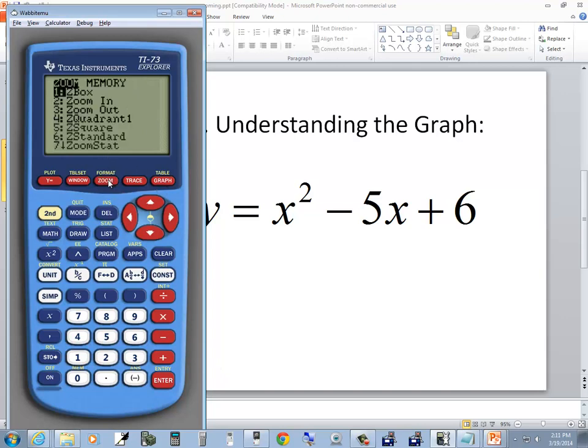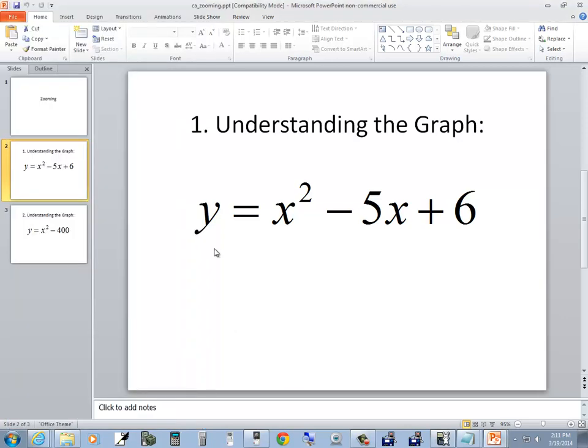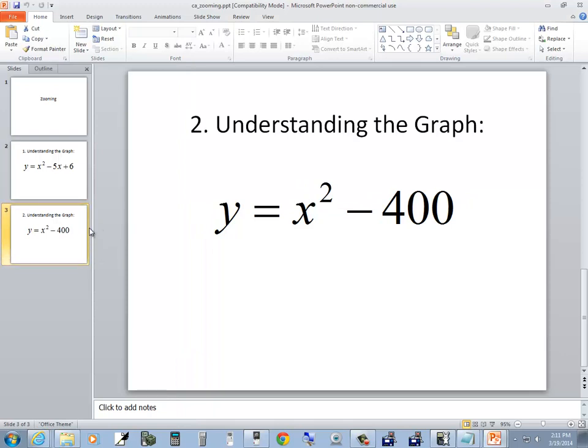And again, set it back. You do zoom and 6 for Z standard. Let's take a look at our second one here. Y is equal to x squared minus 400.